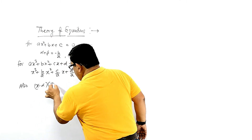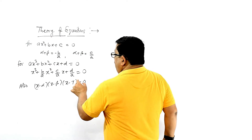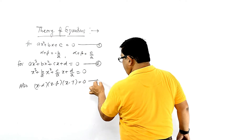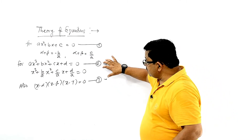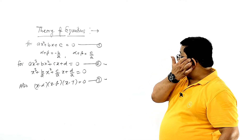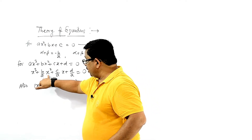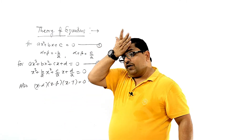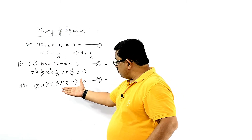The factored form is (x - alpha)(x - beta)(x - gamma) = 0. Equation 2 and equation 3 are the same. If we check the coefficient of x³, x², x, and the constant term, the coefficient of x² will be -b/a.